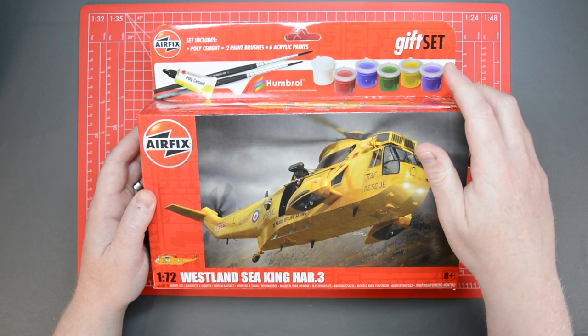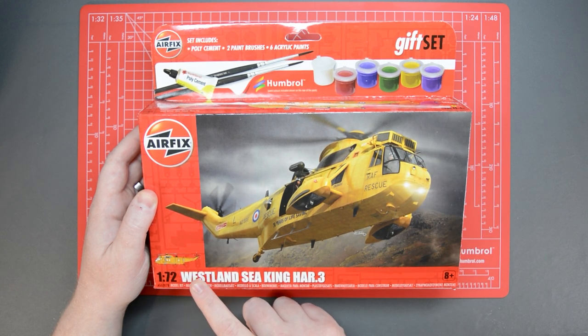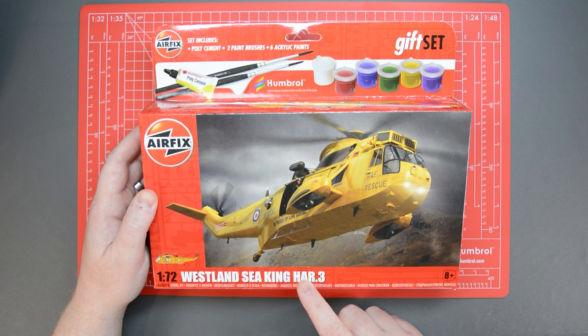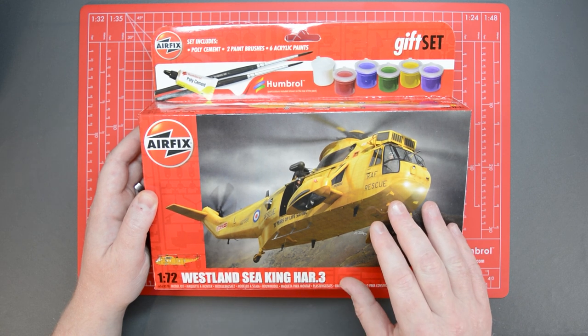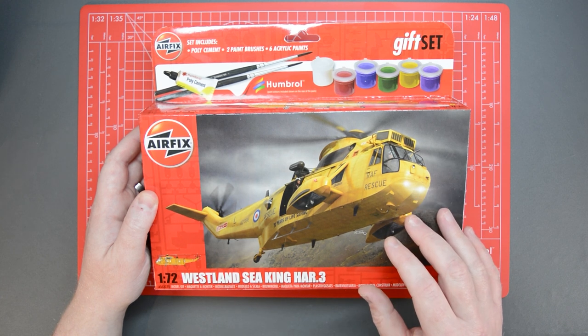In this case it's one of the Airfix gift sets, the 1/72nd scale Westland Seaking HAR-3. This is a modern derivative of a famous search and rescue helicopter that first appeared in the skies over the Falklands War in 1982.